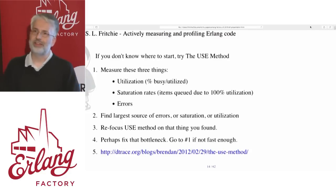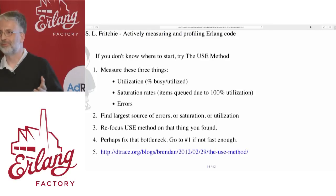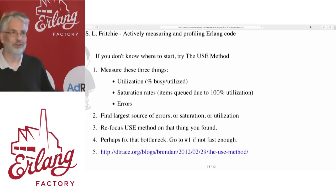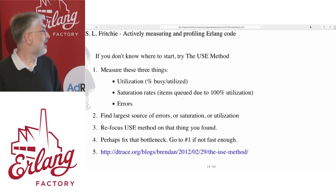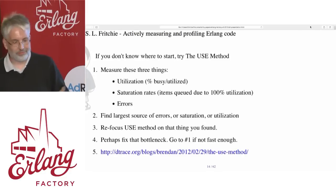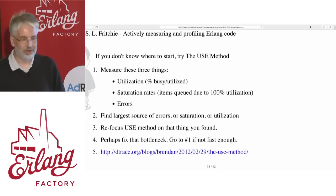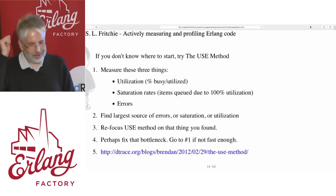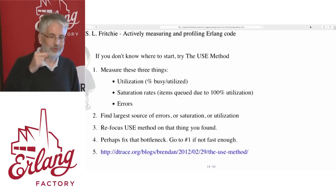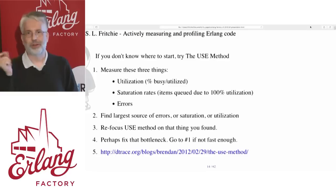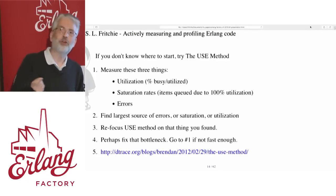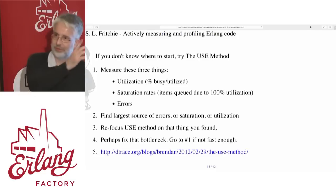The errors are usually the easiest to find — they're usually loud, especially in an Erlang system via the SASL error logger. If there are errors there, you should be looking at those first. You don't have to use fancy tools frequently to see errors that may be perturbing your system. More often than not, looking for saturation rates is easiest, and utilization is the third place you would look. Iterate on the USE method, fix a bottleneck, then go back to step one and repeat until your system is fast enough.